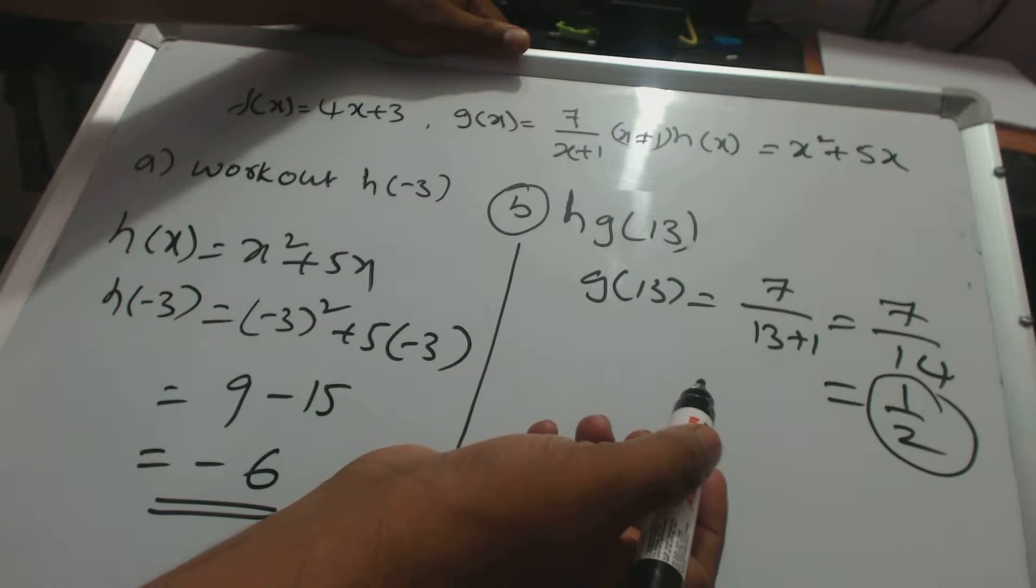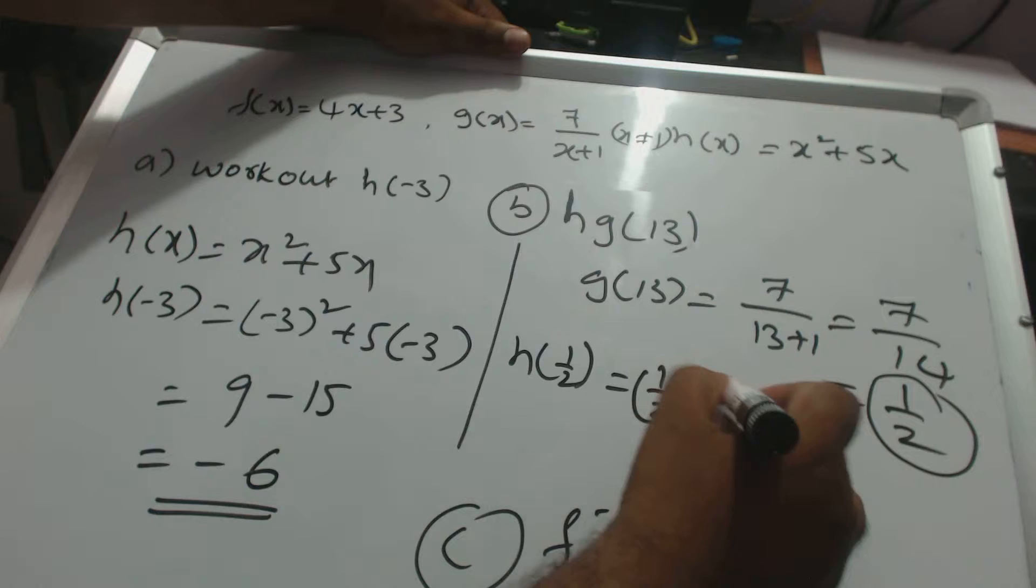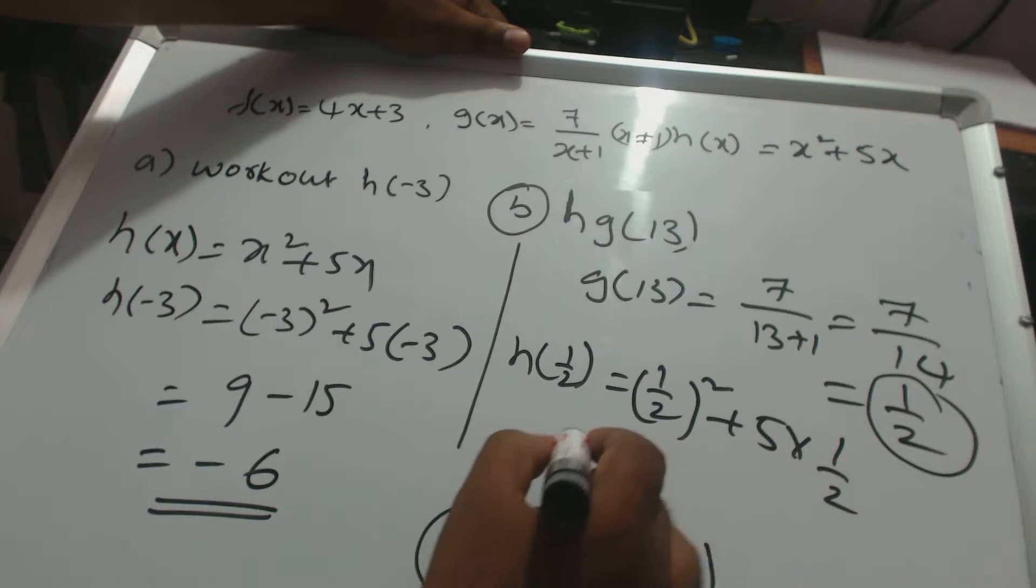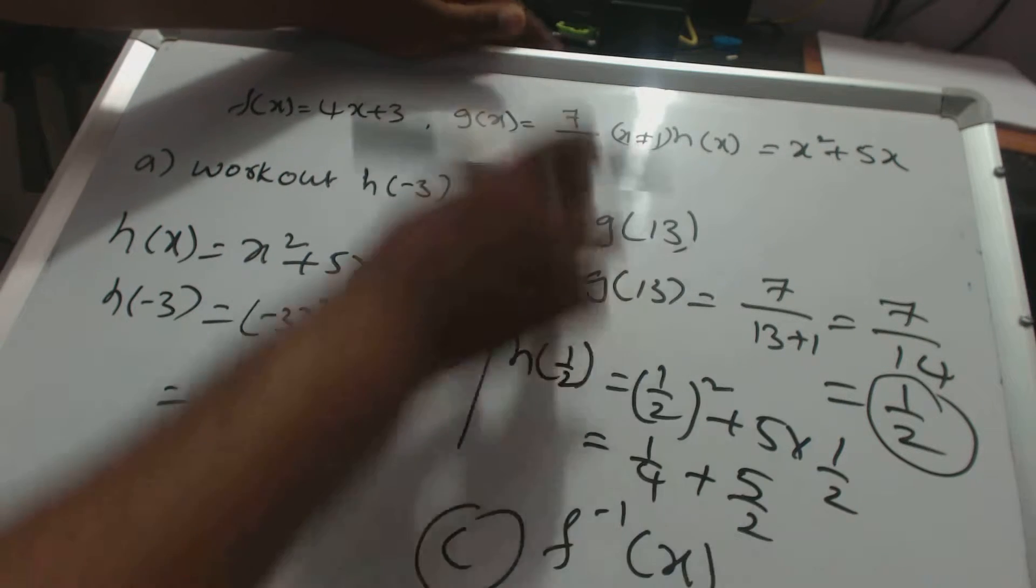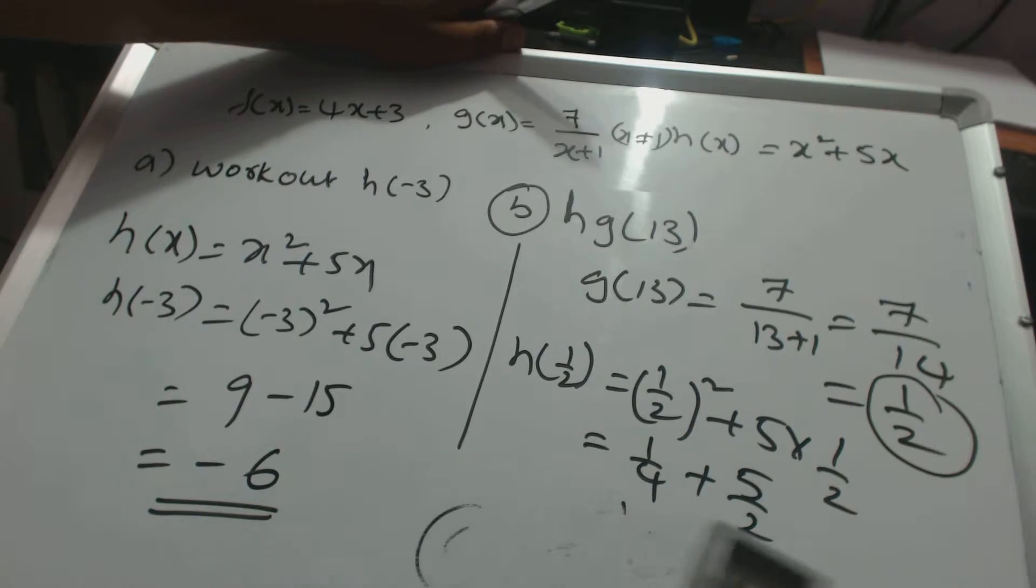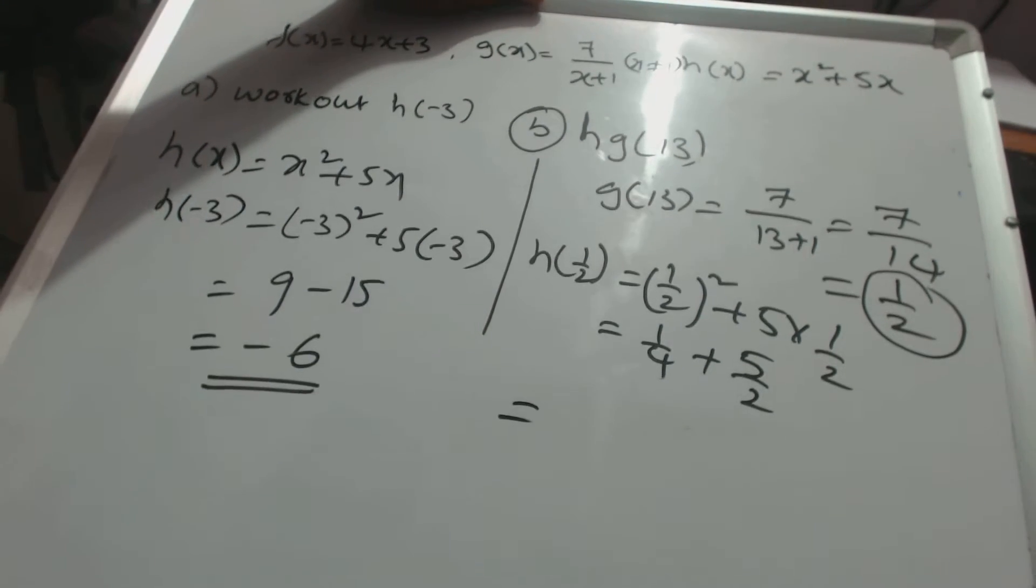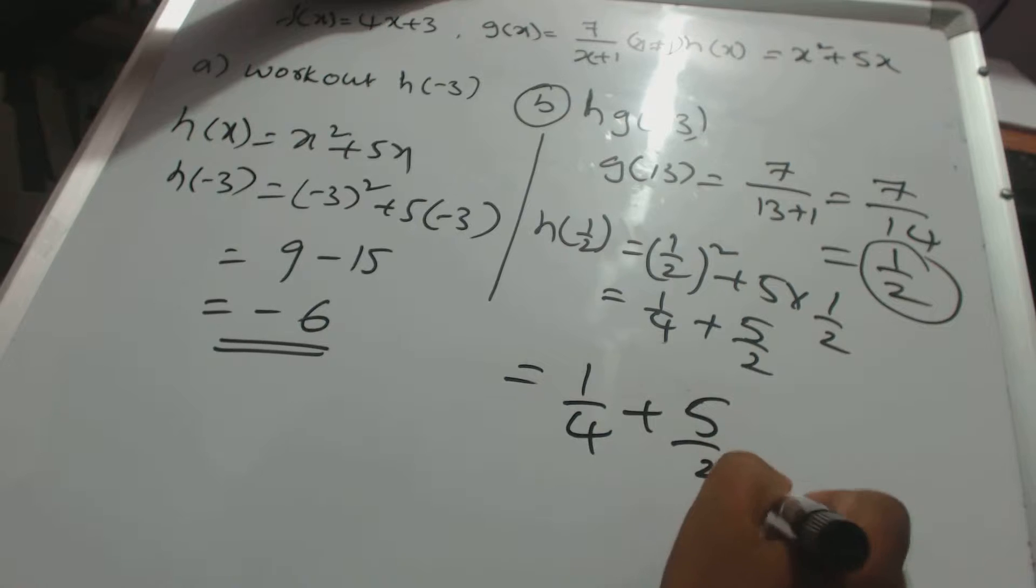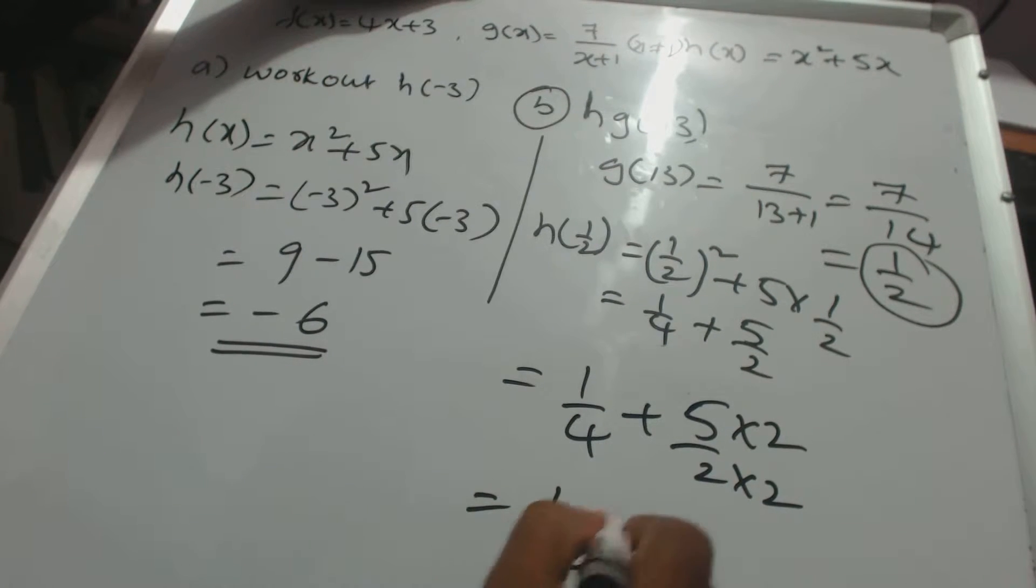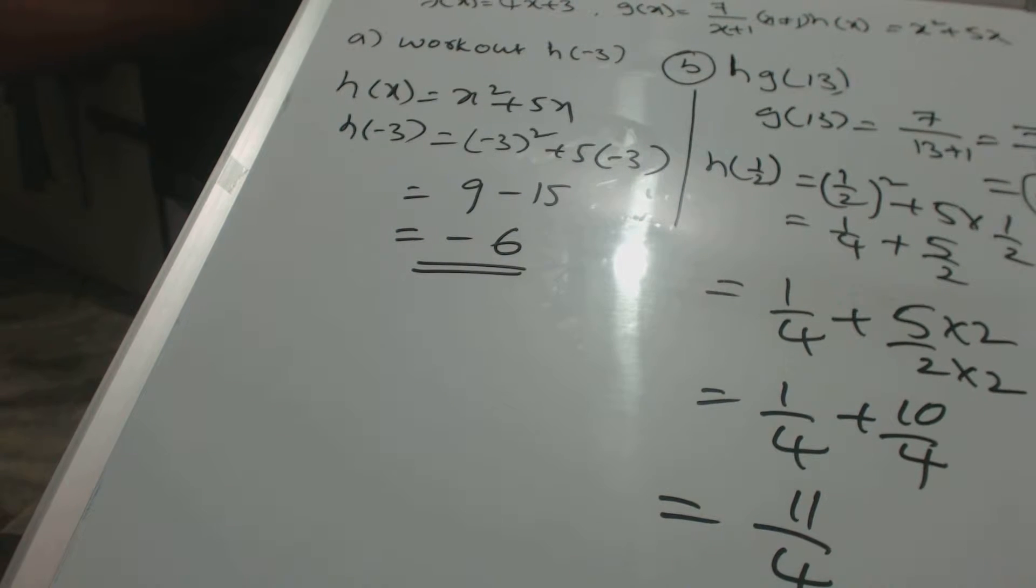Now substitute 1/2 into h(x). We have h(1/2) = (1/2)² + 5(1/2) = 1/4 + 5/2. To add these fractions, find a common denominator. Multiply 5/2 by 2/2 to get 1/4 + 10/4 = 11/4. Now let's see how to find the inverse of a function.